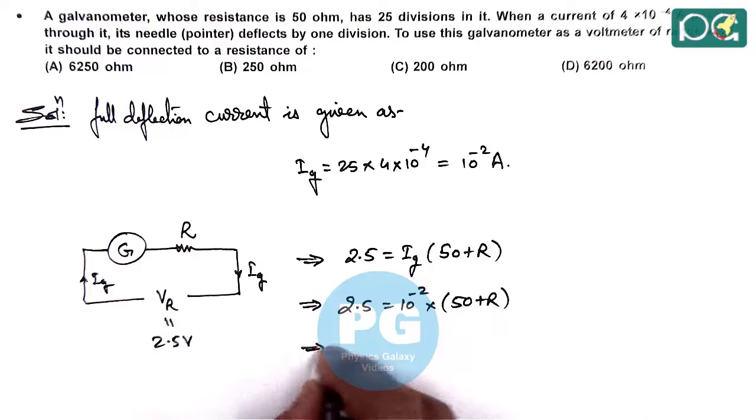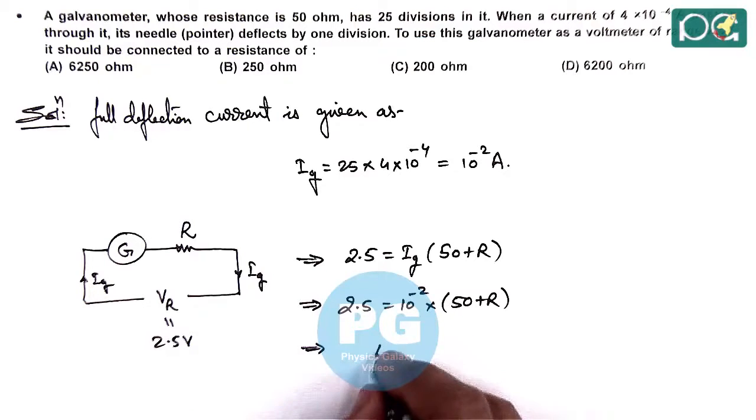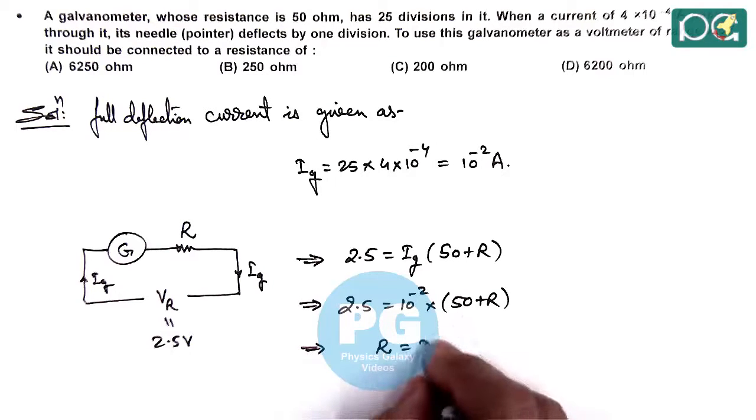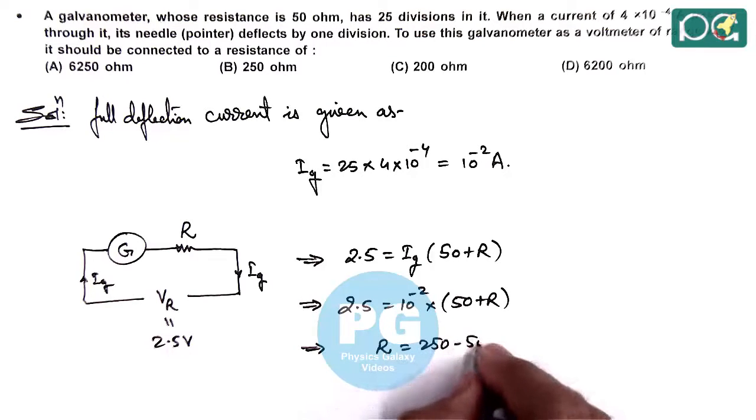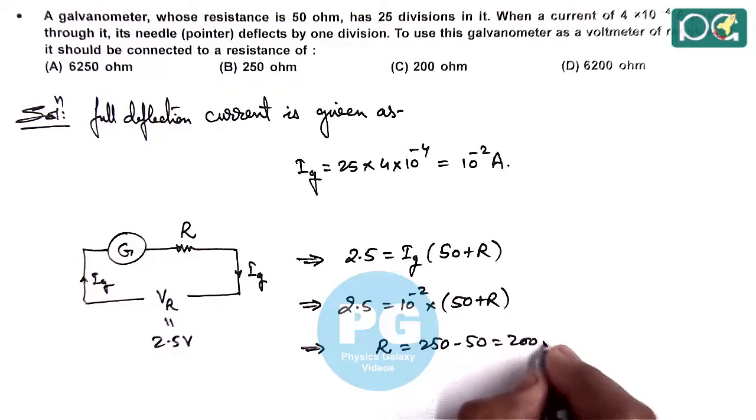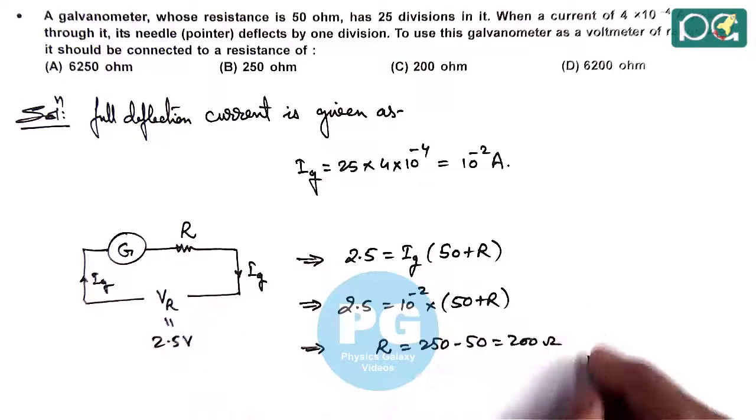On simplifying, this gives us the value of R equals 250 minus 50, which equals 200 ohms. So it matches with option C.